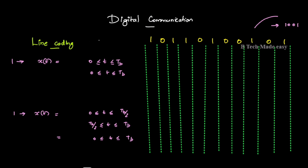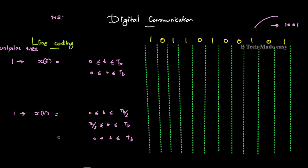There are different line coding schemes. You can use unipolar NRZ. You can use random type. You can use NRZ and RZ. NRZ means non-return to zero — that is the short form.